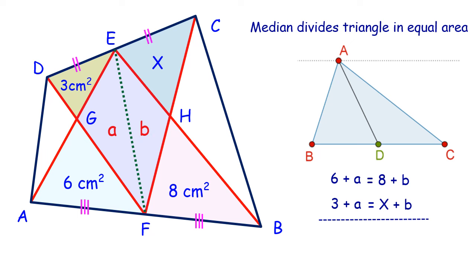So if we subtract both equations, we will get 6 minus 3 equals 8 minus X. These A and A and B and B will get cancelled. Solving it further, we'll get the value of X as 5 cm².